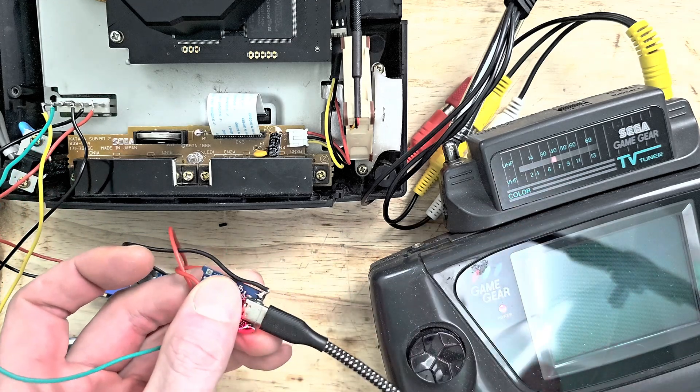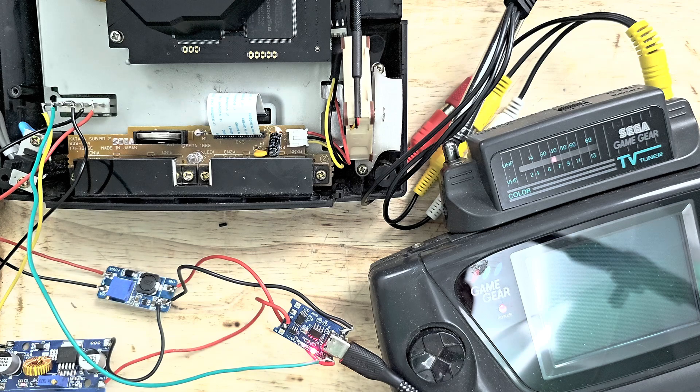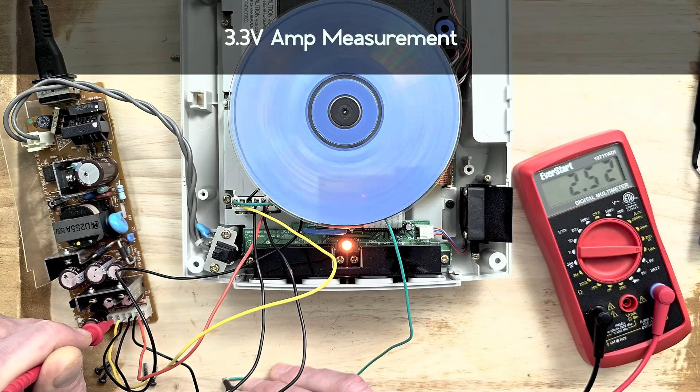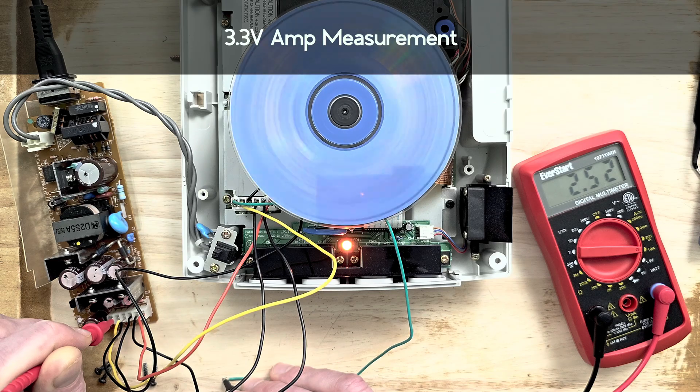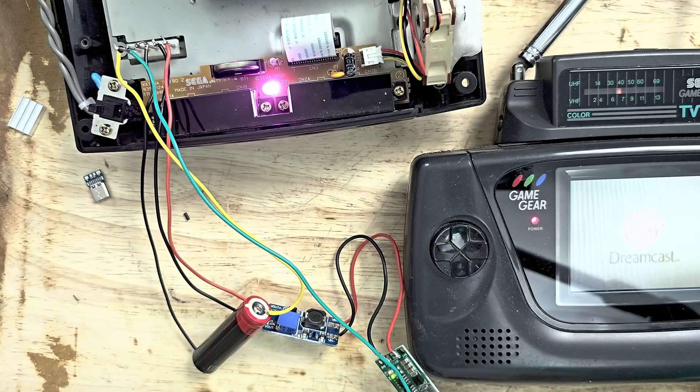Upon adjusting each line's voltage to align with the Dreamcast power requirements, it appears that a 5 volt mod for the system just isn't feasible. On the surface it may seem like the 12 volt line is holding us back, but in reality it's actually the 3 volt line that has the higher power demands. To prove this we can see that the Dreamcast will power on by supplementing this lithium-ion cell instead.